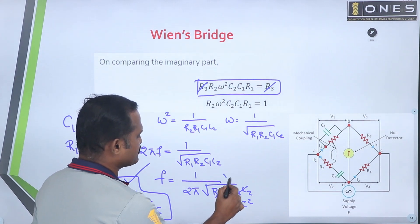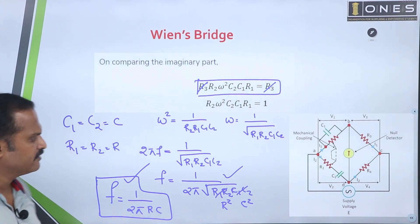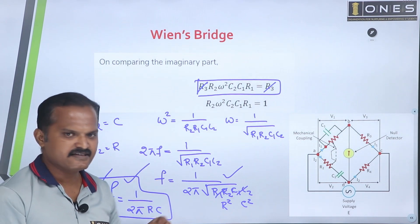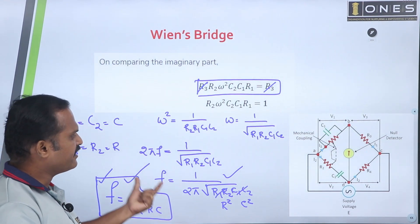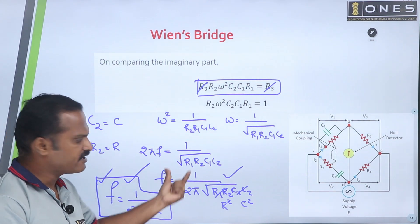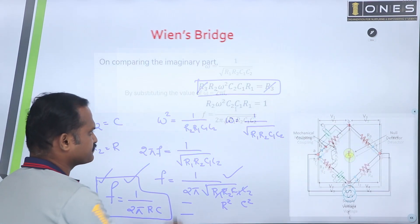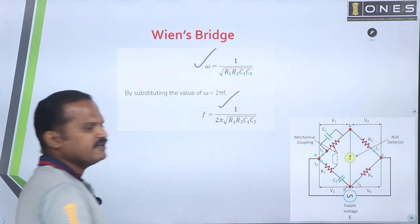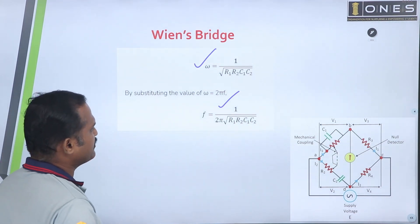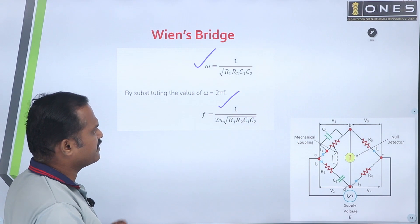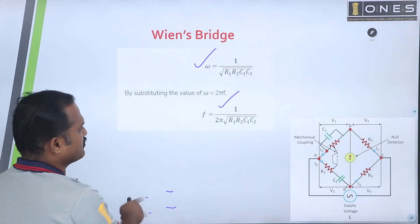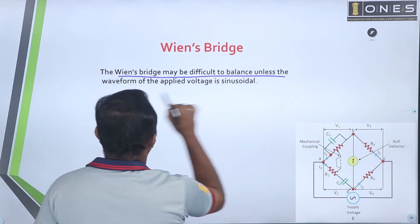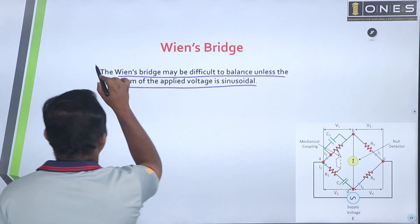This is the main equation. If you take equal resistance values — R1 equals R2 and C1 equals C2 — you get a simplified frequency equation. This is the main bridge arrangement for frequency measurement, and this is how we derive the frequency equation from the Wein's bridge balanced condition.